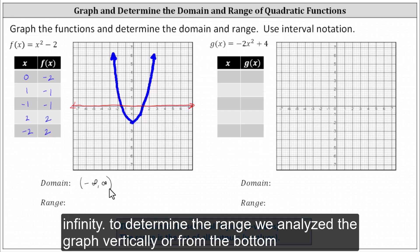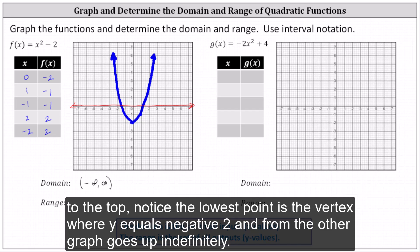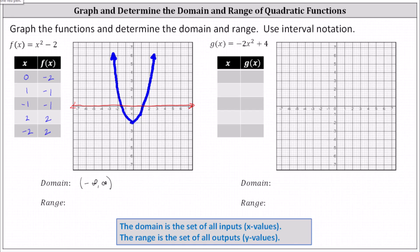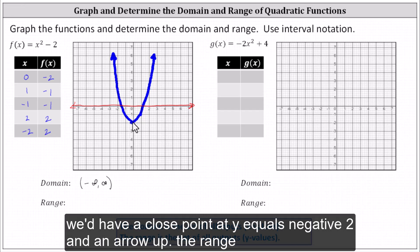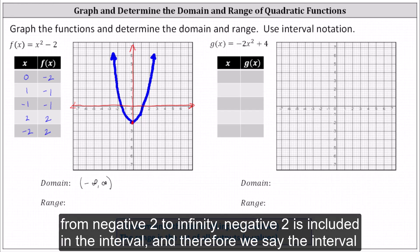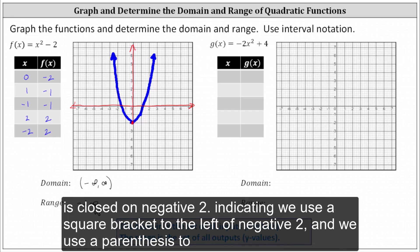To determine the range, we analyze the graph vertically from bottom to top. Notice the lowest point is the vertex where y equals negative two, and from there the graph goes up indefinitely as y approaches positive infinity. If we were to graph the range on the y-axis, we'd have a closed point at y equals negative two with an arrow going up. The range is y greater than or equal to negative two, which in interval notation is the interval from negative two to infinity. Negative two is included, so we use a square bracket to the left of negative two and a parenthesis to the right of infinity.